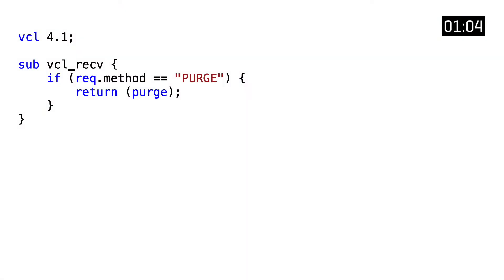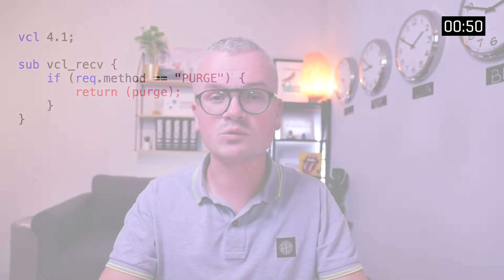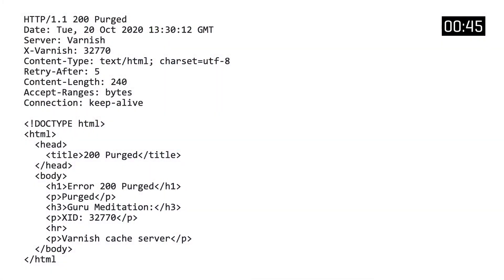In terms of the implementation, we rely on VCL. We do this by hooking into the VCL receive subroutine and adding an extra if conditional that matches the request method. If the request method equals purge, we know we're dealing with a purge request, so we can call the built-in purge logic via return purge. This will remove the object from cache and acknowledge the purge request via the following HTTP response.